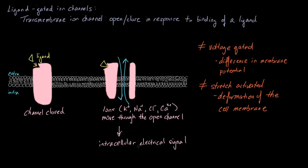We have one outside ligand, and this will allow us to have an intracellular electrical signal that will actually tell the cell to do something. Ligand-gated ion channels are not to be confused with voltage-gated channels, which only rely on a difference in membrane potential, and they are not to be confused with stretch-activated ion channels, which are affected by deformation of the cell membrane.